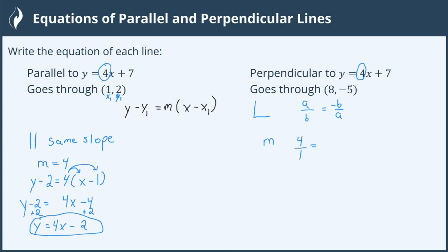We then flip the fraction upside down and make the opposite sign. It's a positive, we make it negative. That makes the slope of our perpendicular line negative 1 fourth.